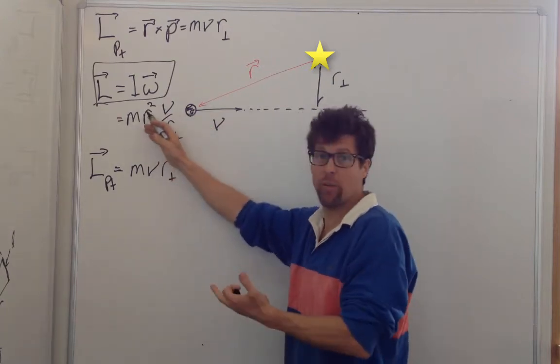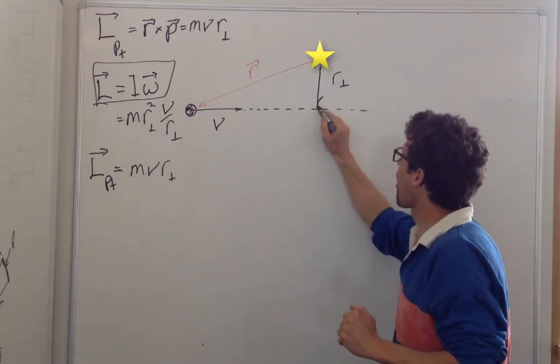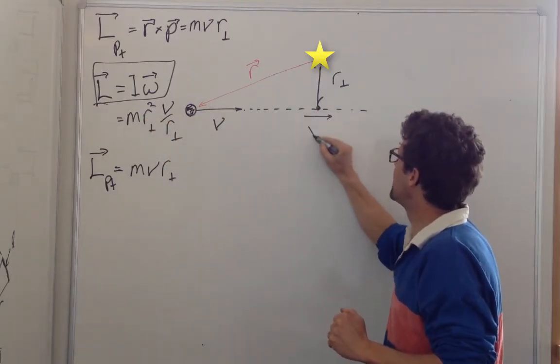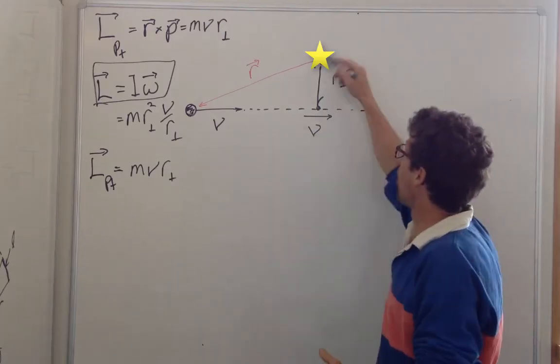because angular momentum is conserved. So I'm going to pick the moment it's right here, moving at speed v. And that's when I reach out and catch it, and I gain all its angular momentum.